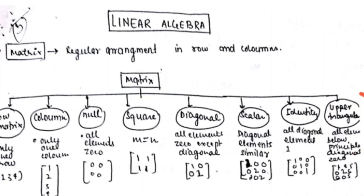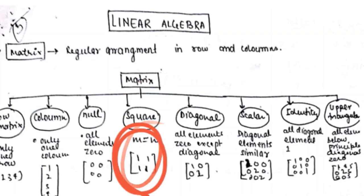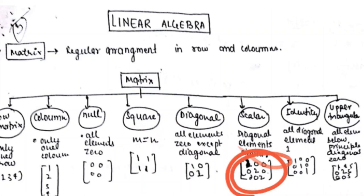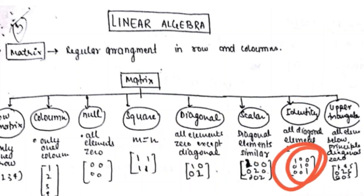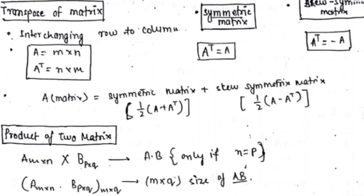In summary: row matrix has one row, column matrix has one column, null matrix has all elements as zero, square matrix has m equal to n, diagonal matrix has all elements except diagonal as zero, scalar matrix has all diagonal elements the same, identity matrix has all diagonal elements as one, and upper and lower triangular matrices have zeros on respective sides of the diagonal.